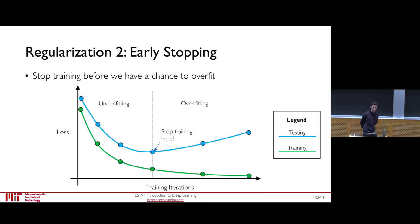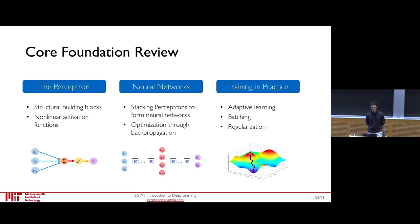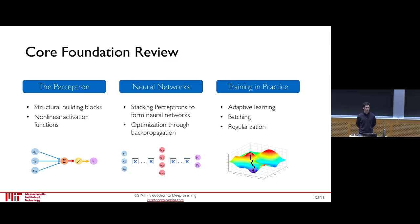To conclude, we've learned about the fundamental building blocks of neural networks — the perceptron — and how to stack these units together to compose complex hierarchical models. We've learned how to mathematically optimize these models using backpropagation and gradient descent. Finally, we addressed practical challenges of training these models, such as using adaptive learning rates, mini-batching, and regularization to combat overfitting. Next, Harini will talk to us about deep sequence models for modeling temporal data.